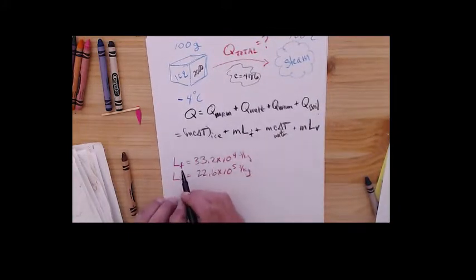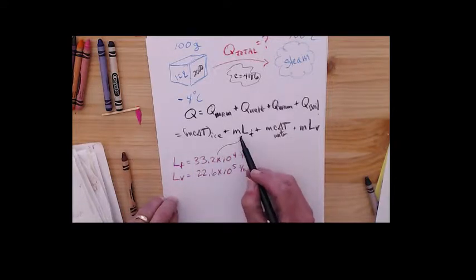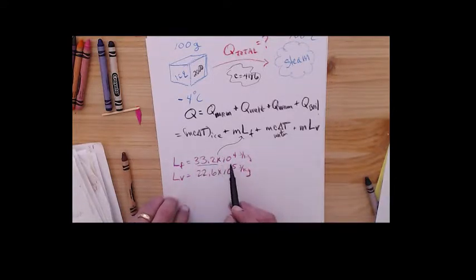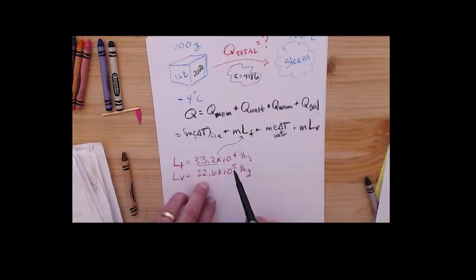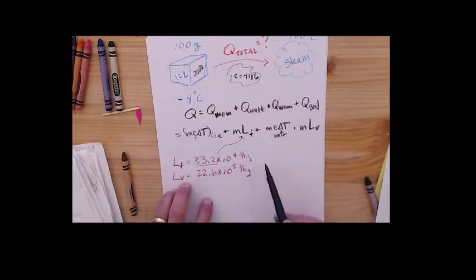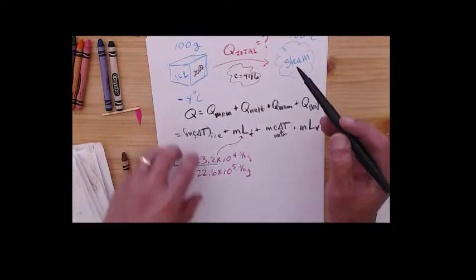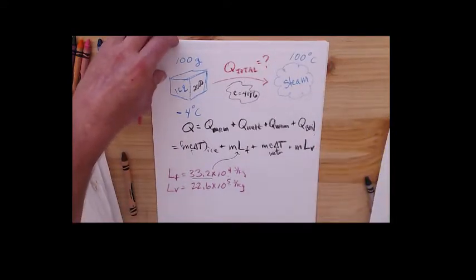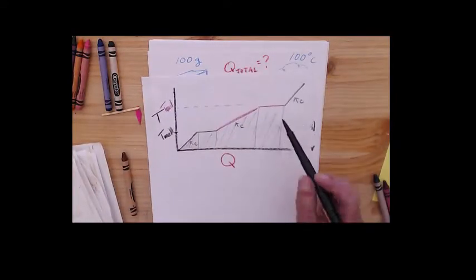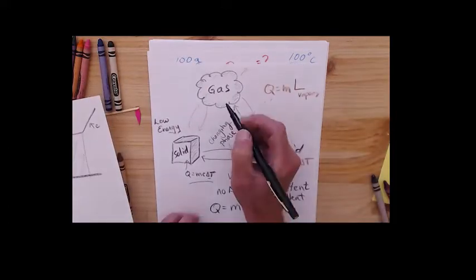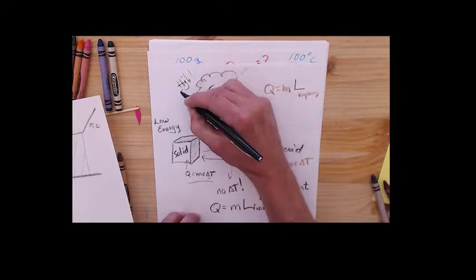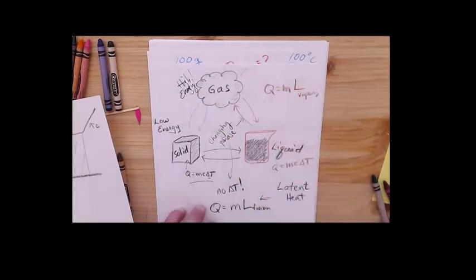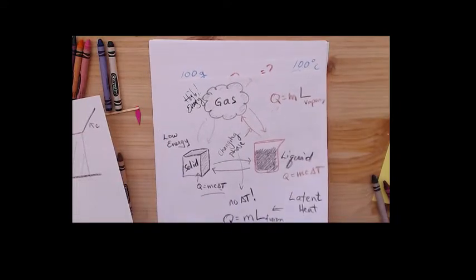Latent heat of fusion for water, this one that's going to go in here, is 33.2 times 10 to the 4th. Notice it's way bigger than 4186. And then the vaporization is 22.6 times 10 to the 5th. It's 10 times larger. Gases often have significantly more energy. Gases are high energy. So steam burns are nasty.